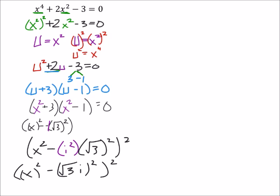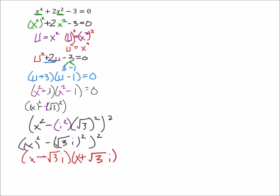Now I've got the difference of two squares. A lot of people skip all those steps and they move right into this stuff. Now what I have is (x - √3i)(x + √3i).